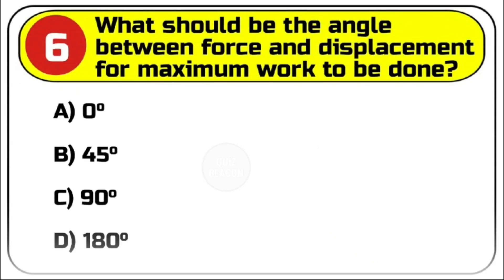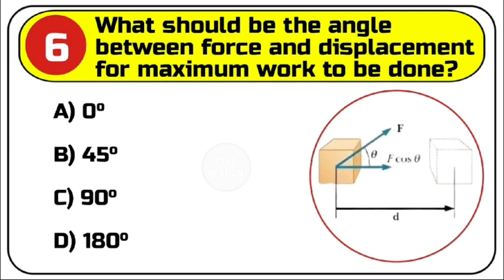Question number 6. What should be the angle between force and displacement for maximum work to be done? Options are A. 0 degrees. B. 45 degrees. C. 90 degrees. D. 180 degrees.